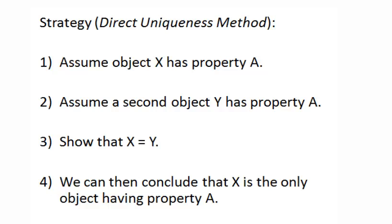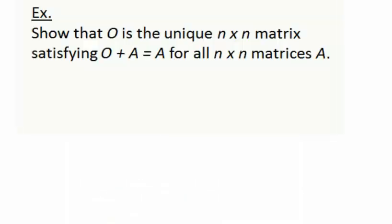The first step is to assume that object X has already been proven to have property A. We'll deal with constructing such an object X in the next lesson. The next step is to assume a second object Y also has property A. Then we use mathematical logic to deduce that X is identical to Y, which allows us to conclude that X is the unique object with property A.